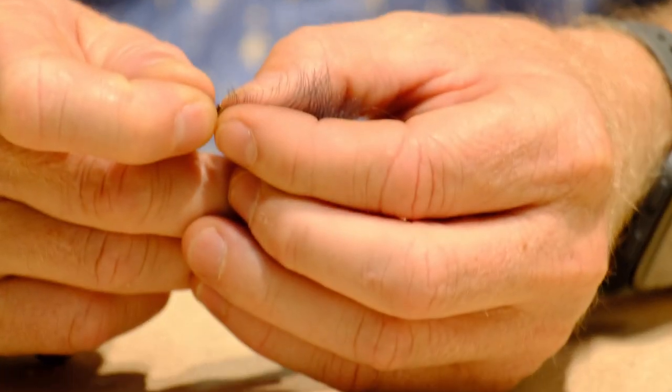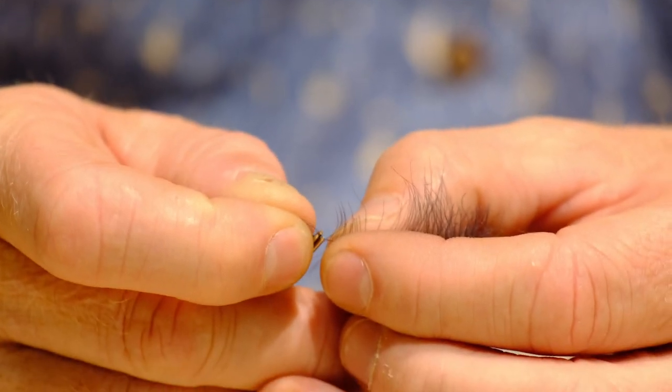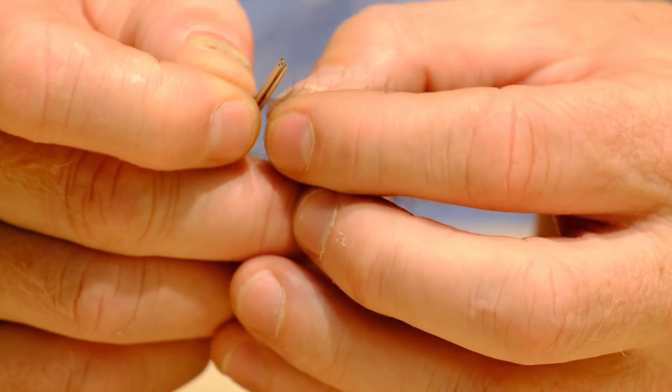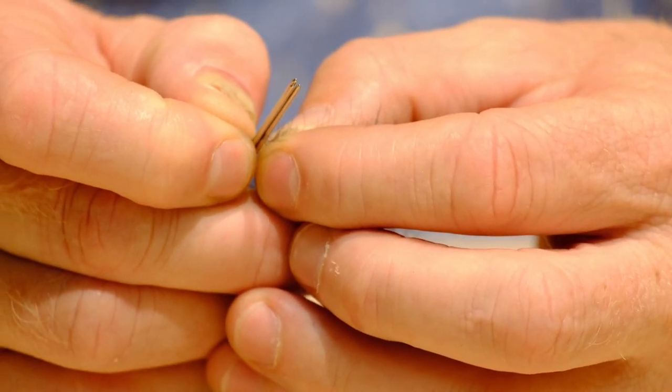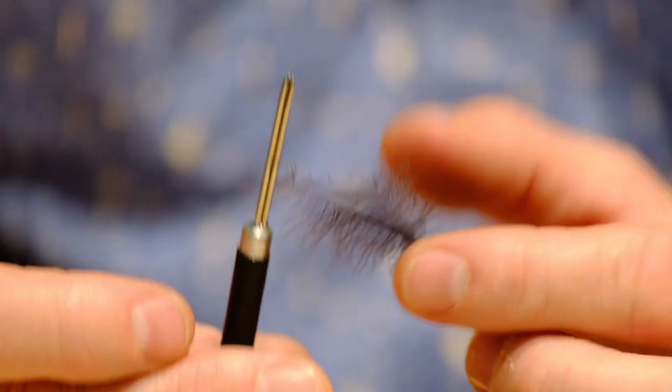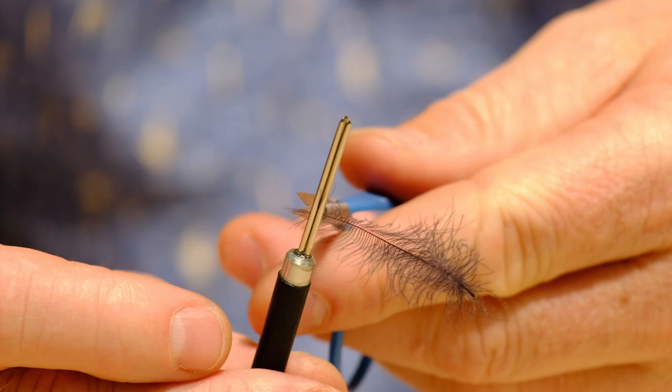Insert the CDC feather into the tool. This feather I've chosen has a very fine tip. Slide it down the tool until it locks into position, then you can remove the tip of the CDC if you want.